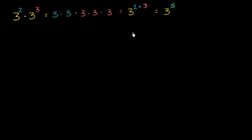And that's a little bit of a review. This is one of the core exponent properties. If you have the same base multiplied to two exponents, and you're taking the product of those two expressions, you just add the exponents. Three to some exponent times three to some other exponent is going to be three to the sum of those two exponents.